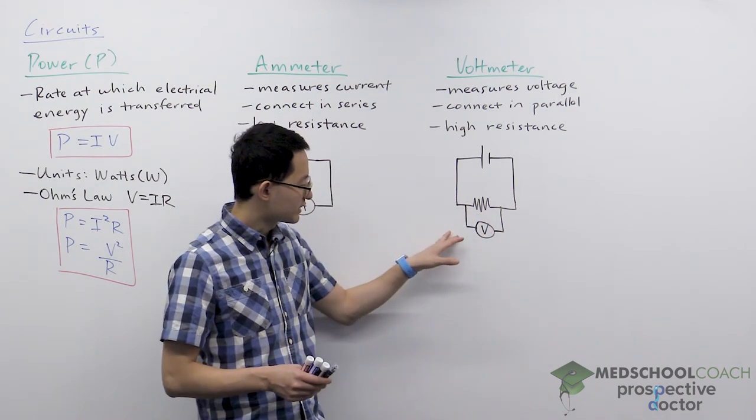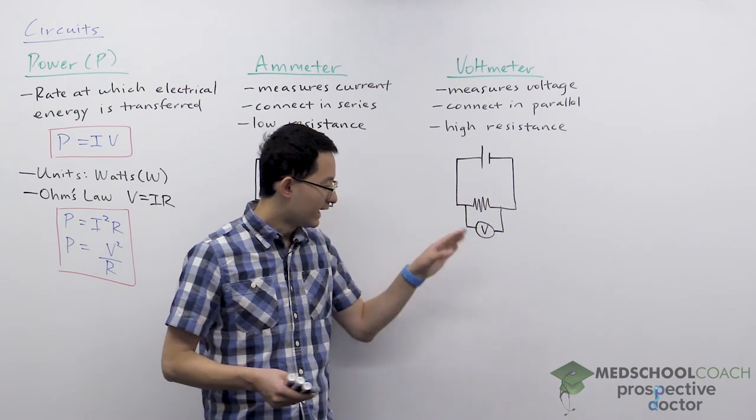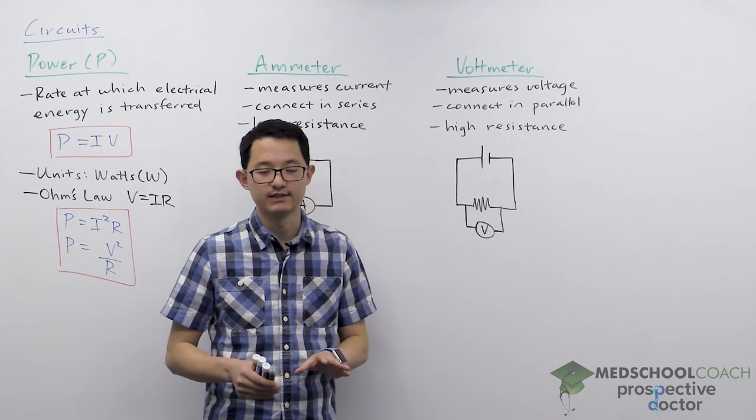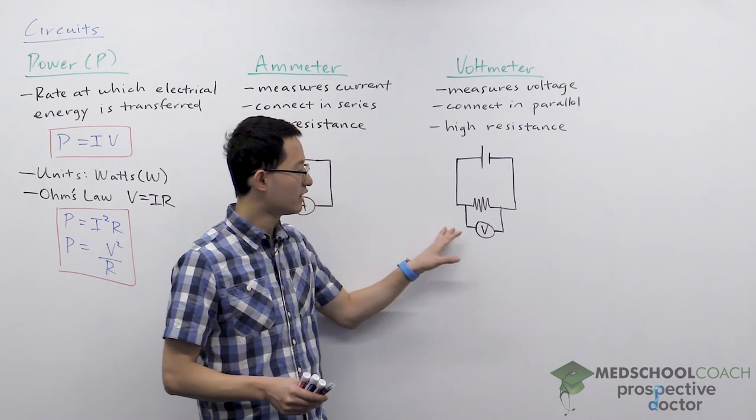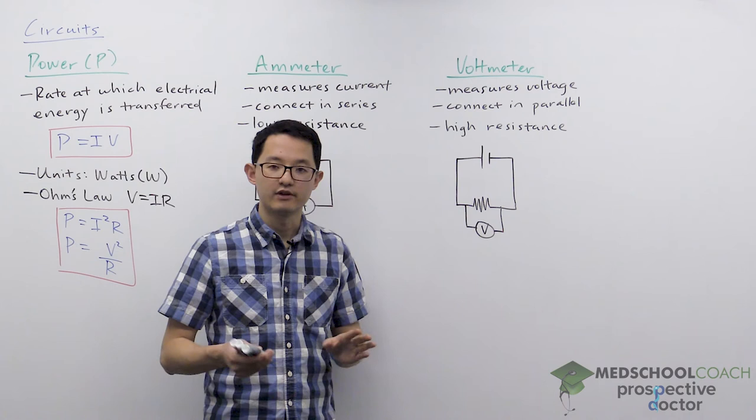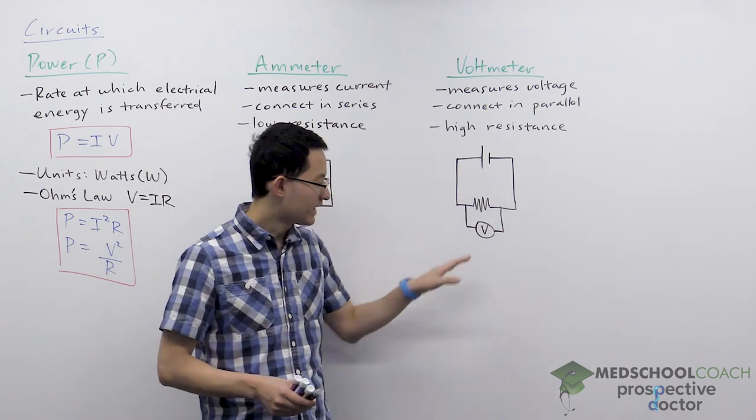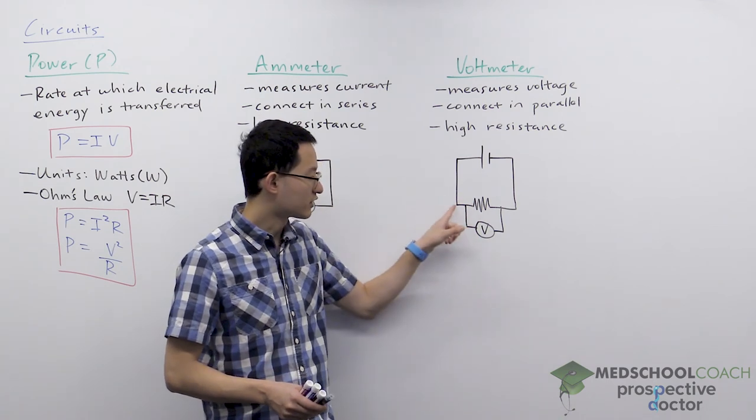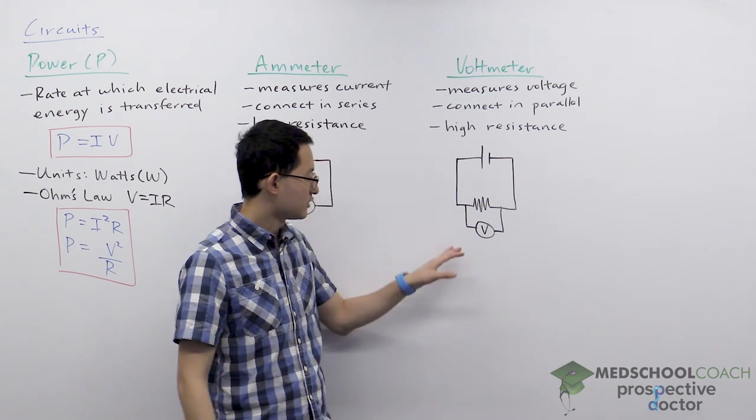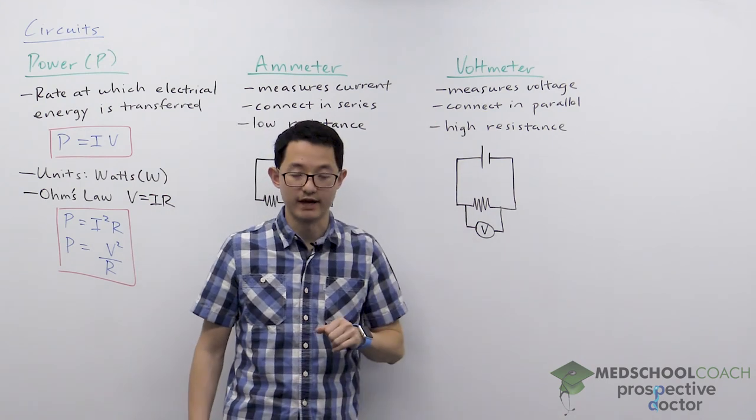Now, when you have circuit elements in parallel, current has two different paths that it can flow through. Again, since we want the meter that we're using to affect the circuit as little as possible, we would want all the current to pass through the resistor and not to pass through the voltmeter. The way you can do that is if your voltmeter has extremely high resistance. If it has extremely high resistance, then all the current will just go through the circuit element for whose current you're trying to measure. So that's voltmeters: connect in parallel and you want them to have high resistance.